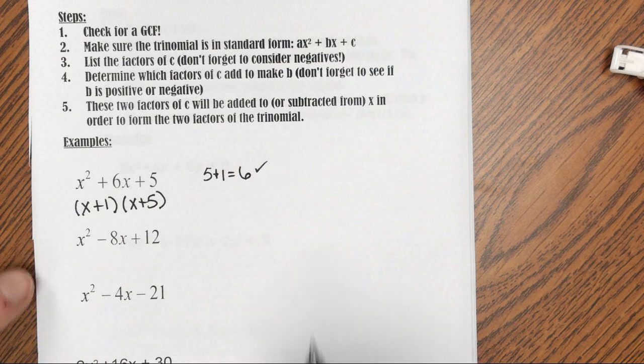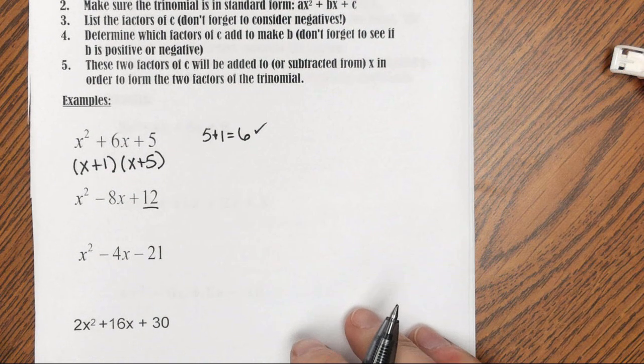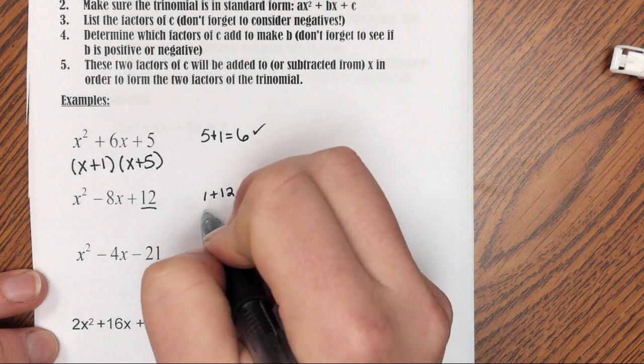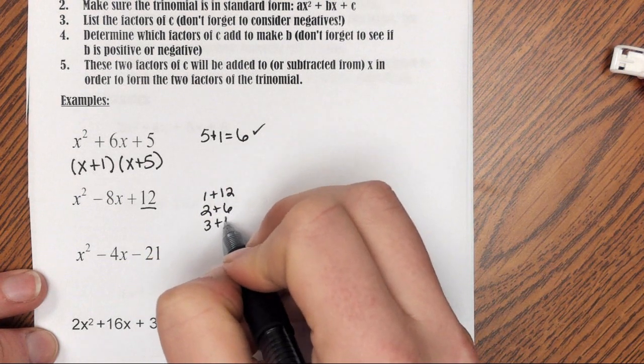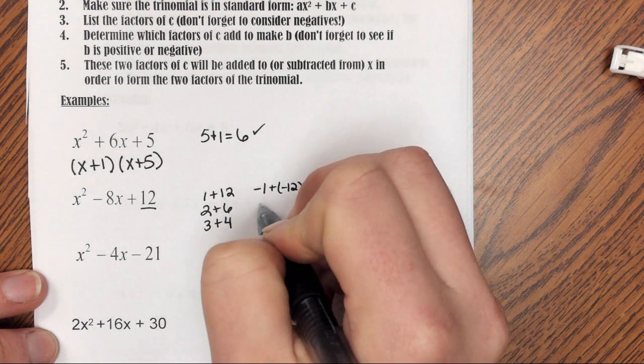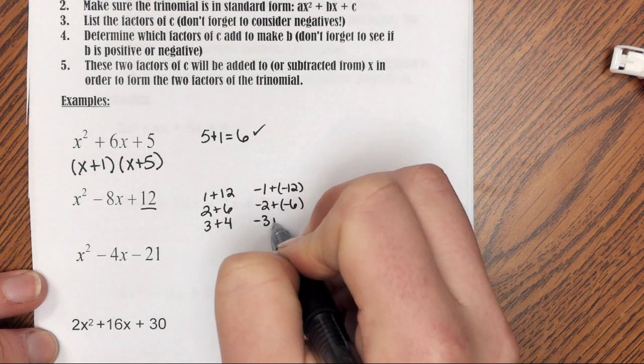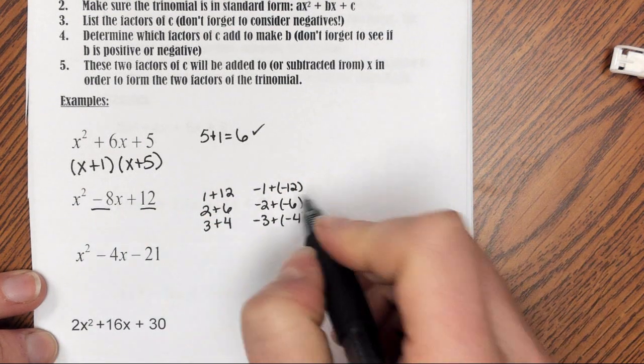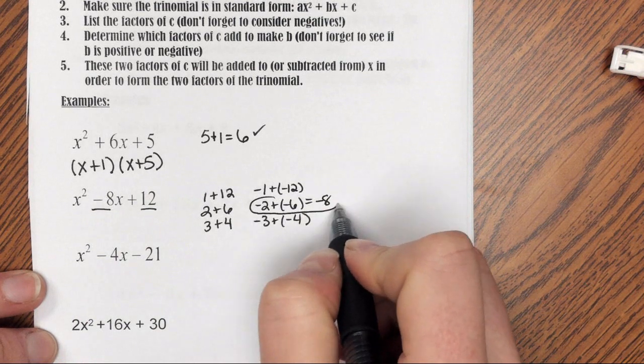Alright, example 2. I need the factors of 12 that add to be negative 8. So my factors of 12 are 1 and 12, 2 and 6, 3 and 4. Or I can have negative 1 and negative 12, negative 2 and negative 6, negative 3 and negative 4. And of those, the only two that add together to be negative 8 are negative 2 and negative 6. So this is the factor pair that I'm looking for.